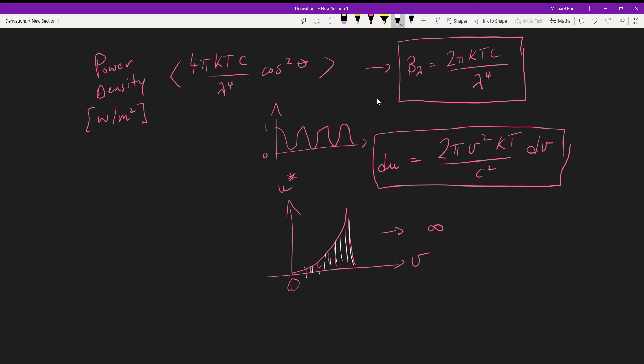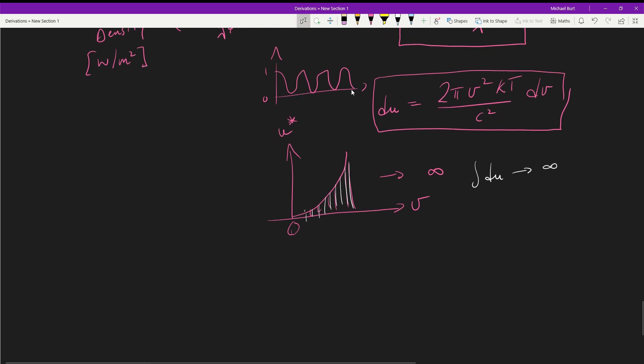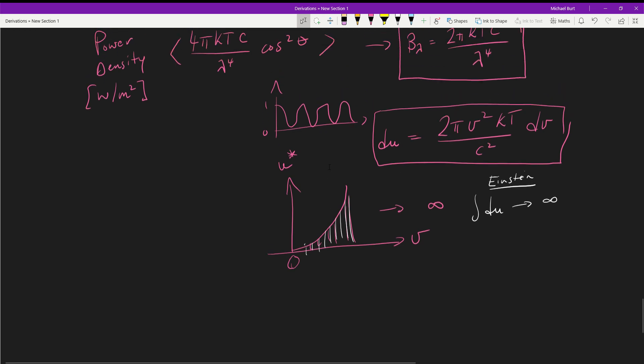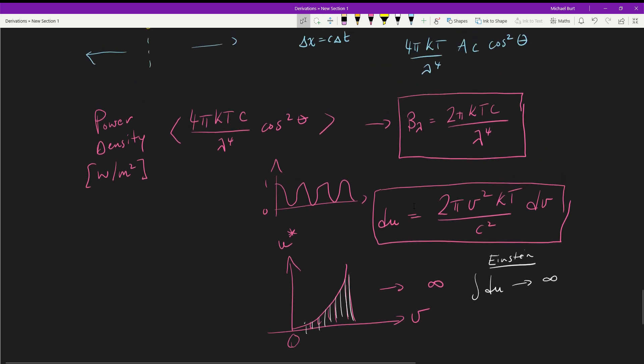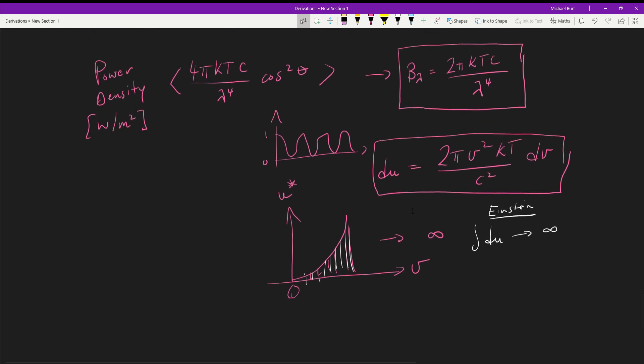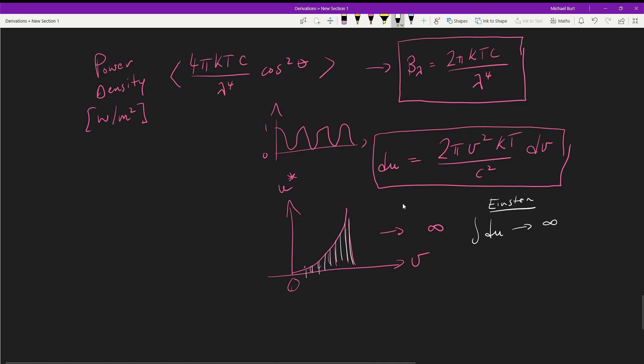You can forcibly represent this result and say that this actually goes to infinity when you integrate it. I think Einstein actually wrote this result forcibly in this way. This is the ultraviolet catastrophe, and if you think about everything we've done over the past few videos, this demonstrates a giant hole in the understanding of physics.